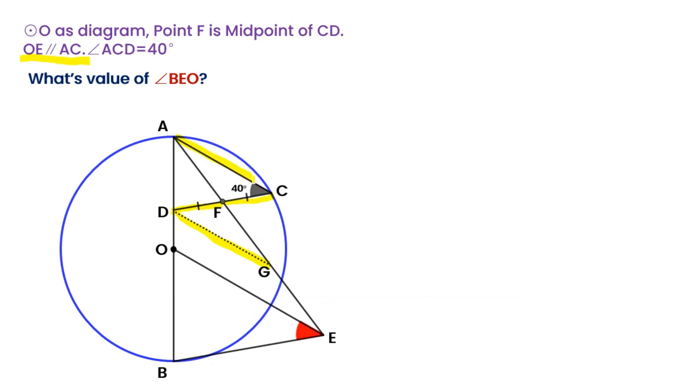From parallel theorems, we can get DG is also parallel to OE. We can get triangle AFC congruent to triangle GFD. So DG equals AC.